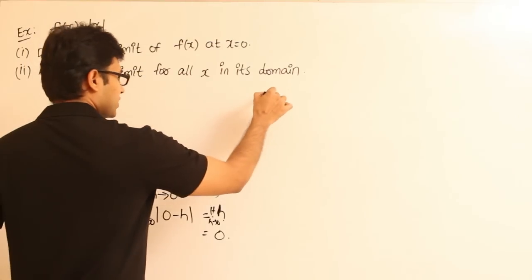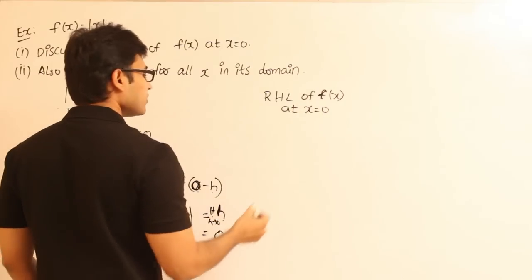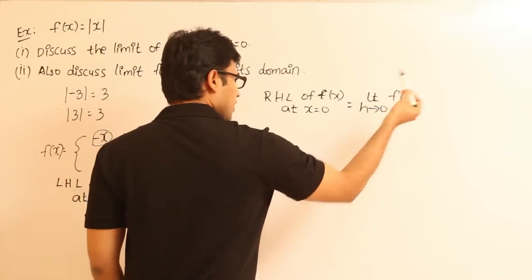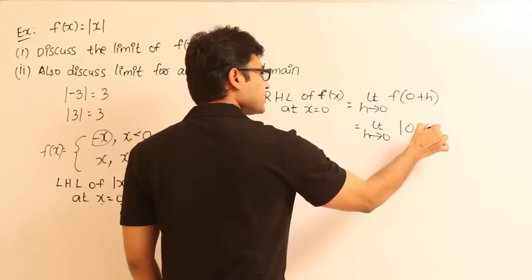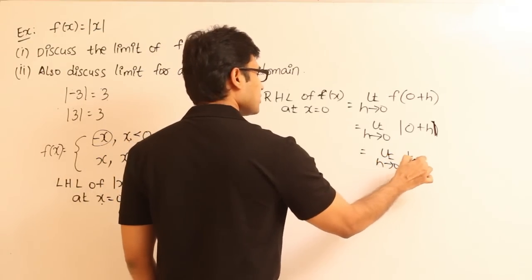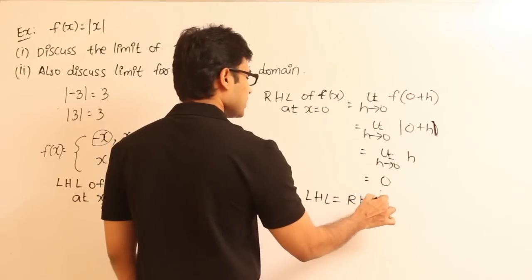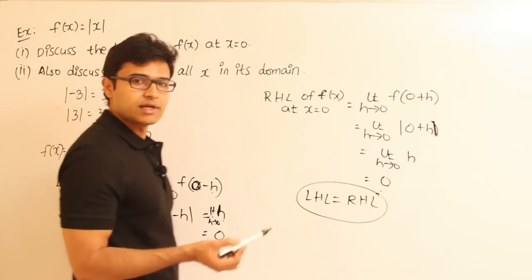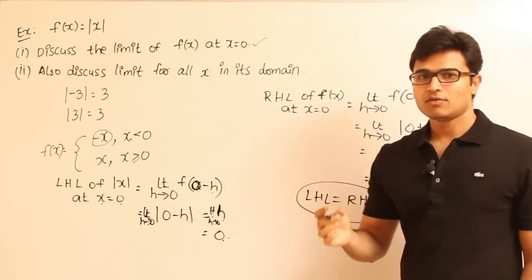Now let's examine the right-hand limit of f(x) at x = 0. The right-hand limit equals limit h tends to 0 of f(0 + h), which is mod(0 + h). Since h is a positive number, mod(0 + h) is simply h. Applying limit h tends to 0, we get 0. Therefore, left-hand limit equals right-hand limit — both are 0. So the limit exists at x = 0 and the value of the limit is 0.